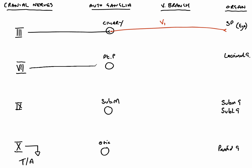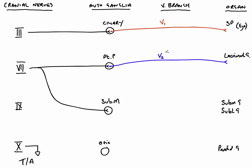If we then turn to the facial nerve, the facial nerve contains pre-synaptic fibres that synapse in the pterygopalatine ganglion, and it also gives rise to pre-synaptic fibres that synapse in the submandibular ganglion. From the pterygopalatine ganglion, post-synaptic fibres pass towards the lacrimal gland, and they do this within the second division of the trigeminal — the maxillary division.